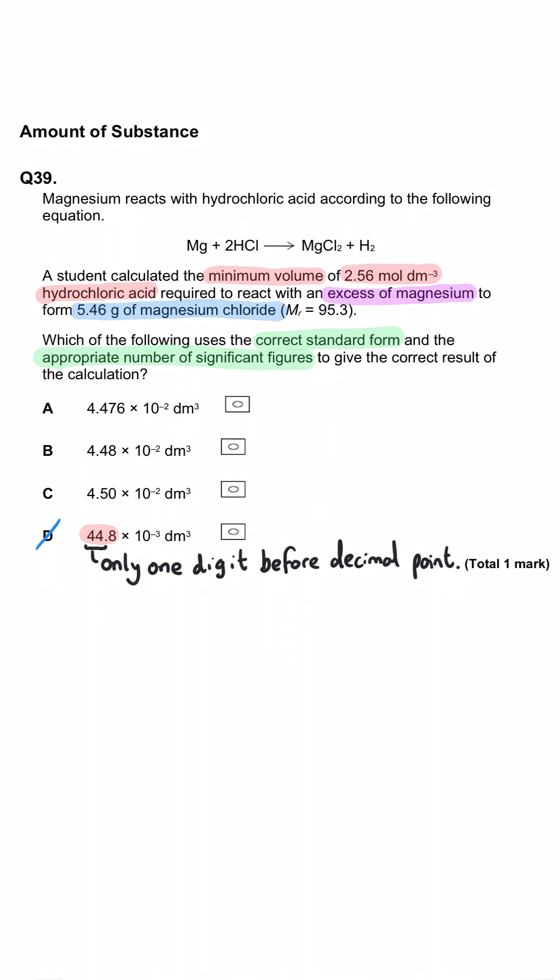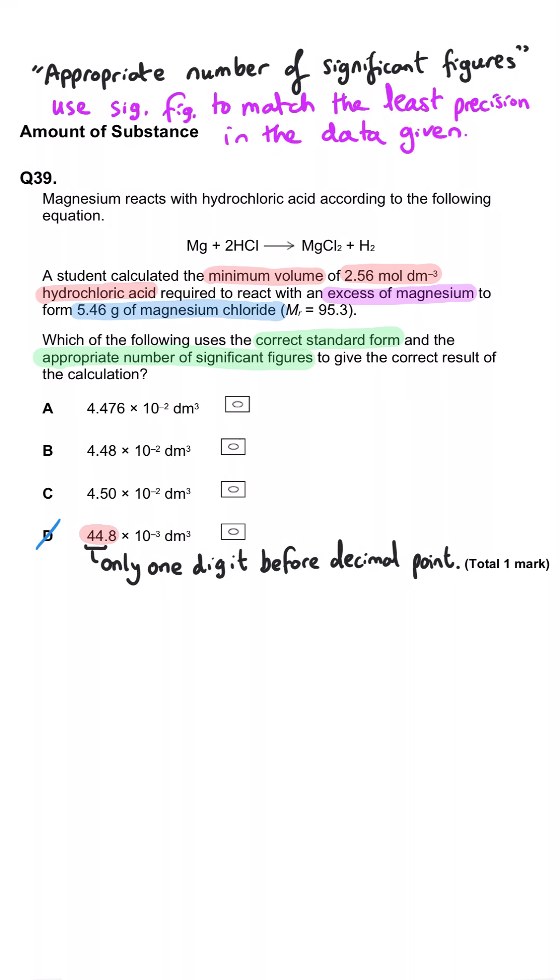And then it also says the appropriate number of significant figures. Well, if we look at the data in the question, that has all been given to three significant figures. Which means our final reported answer needs to also be to three significant figures. Which means we can rule out A because that's actually to four significant figures. And now we're just deciding between B and C. To do this, we actually do have to do a calculation.